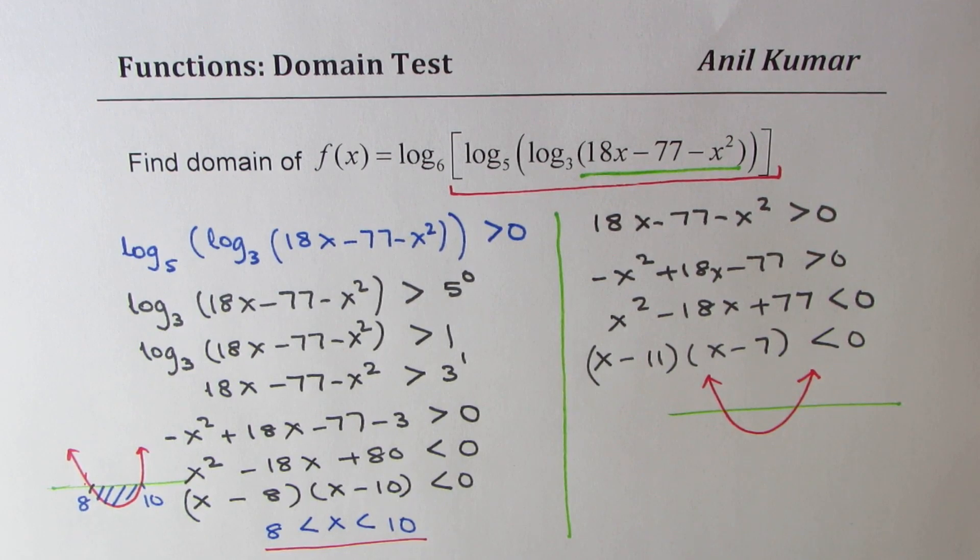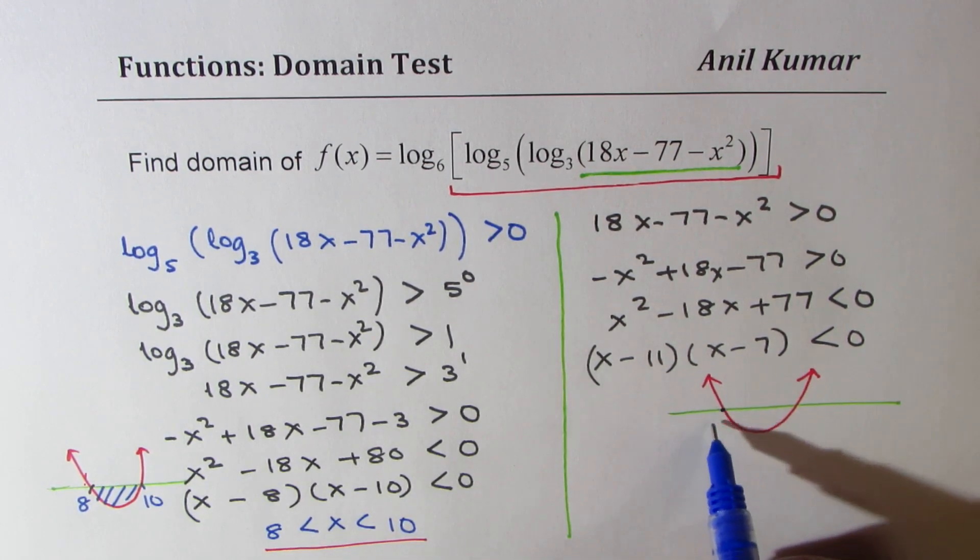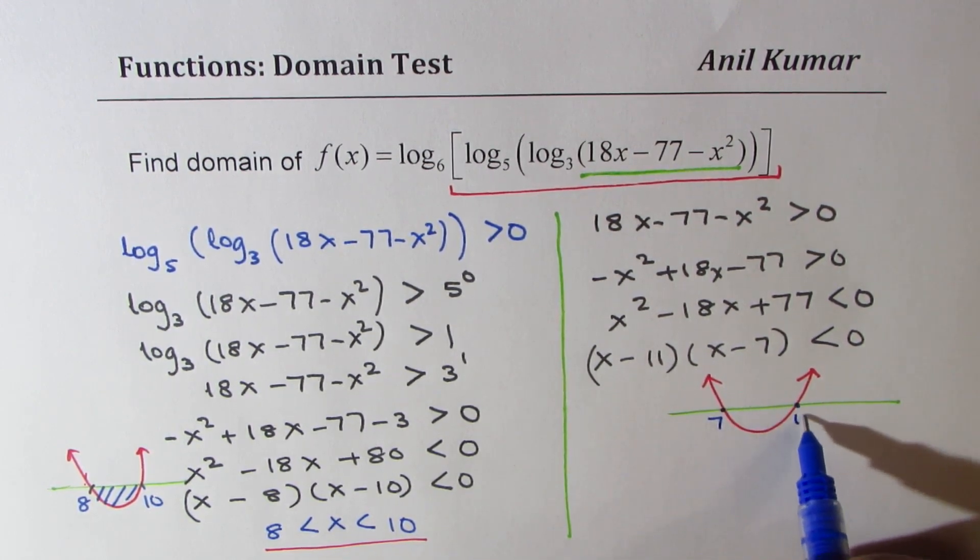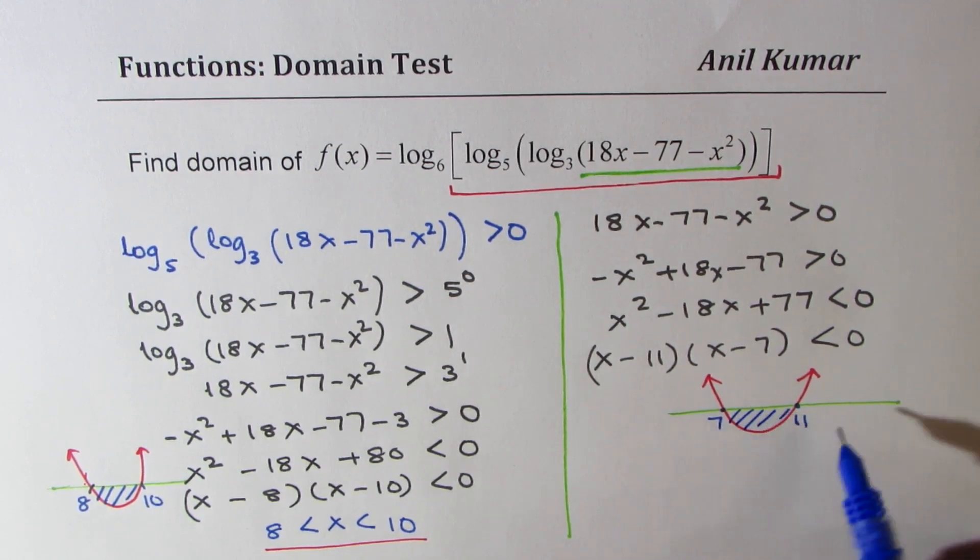The zeros are at this time 7 and 11. Less than means we are looking for this portion. Perfect.